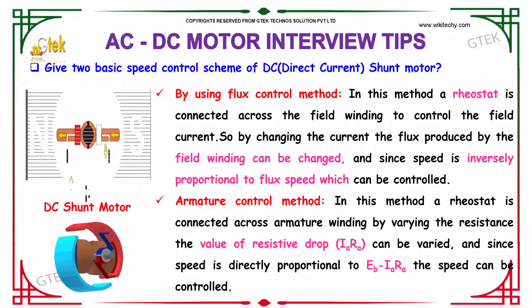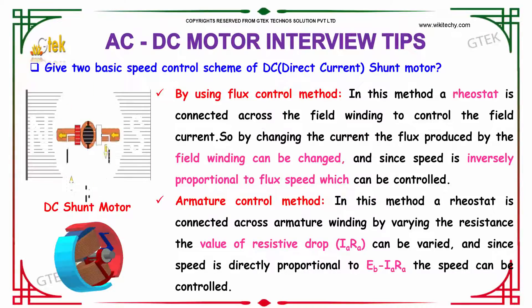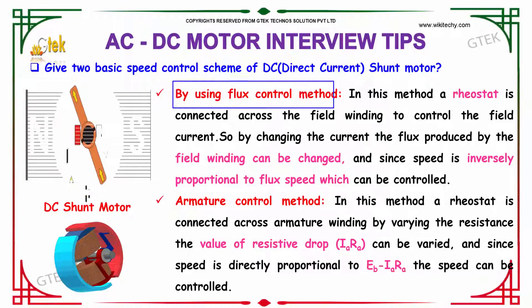Give two basic speed control schemes of the DC shunt motor. The two basic speed control schemes of the direct current shunt motor are: the first scheme is by using flux control methodology, and the second one is all about the armature control method.